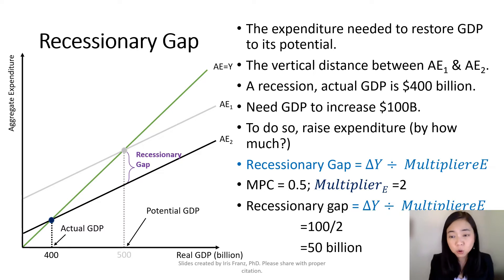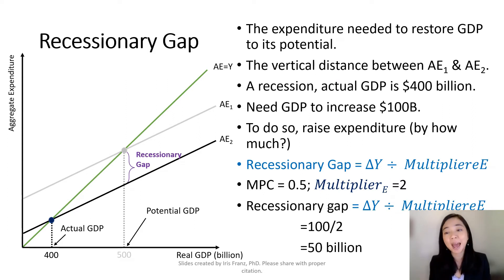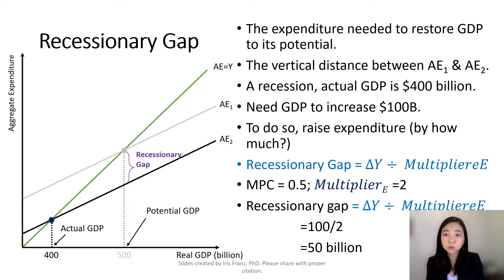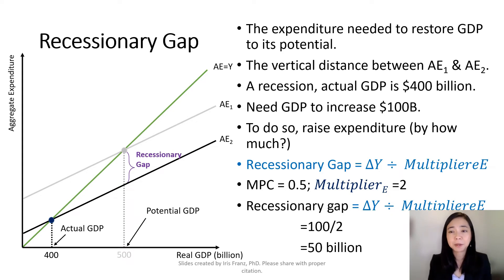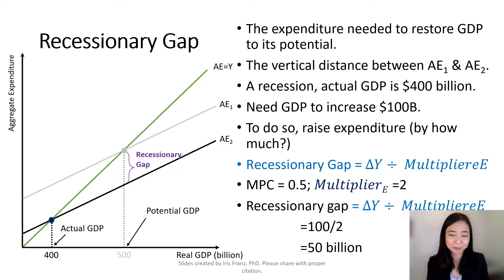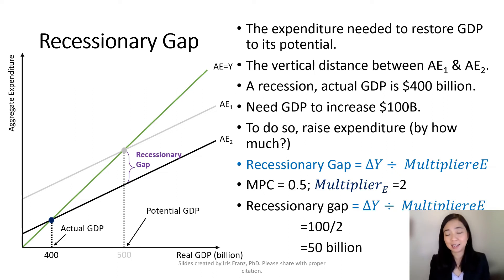In order to restore our GDP from $400 billion back to its potential, we will need to increase our aggregate expenditure. But by how much? By exactly the amount of the recessionary gap. And graphically, that will be the distance between AE1 and AE2.